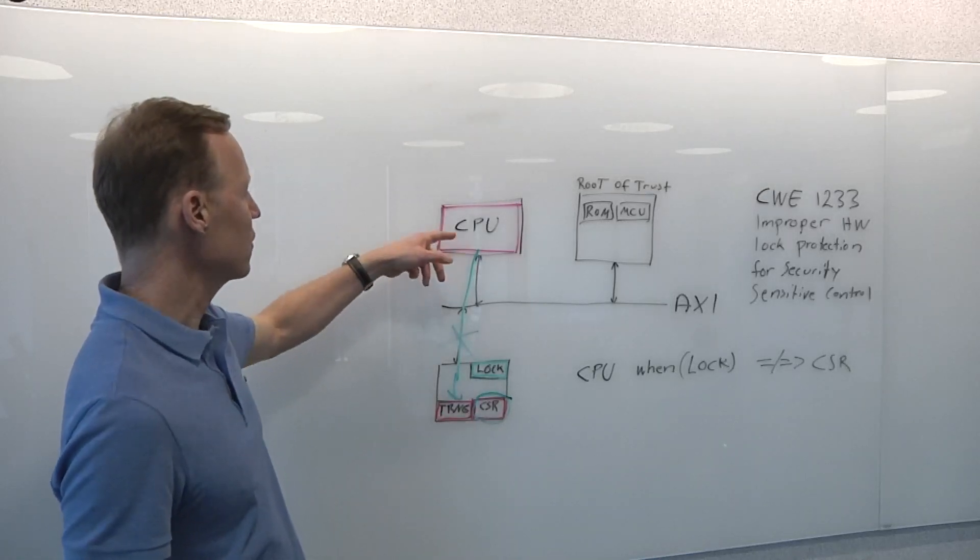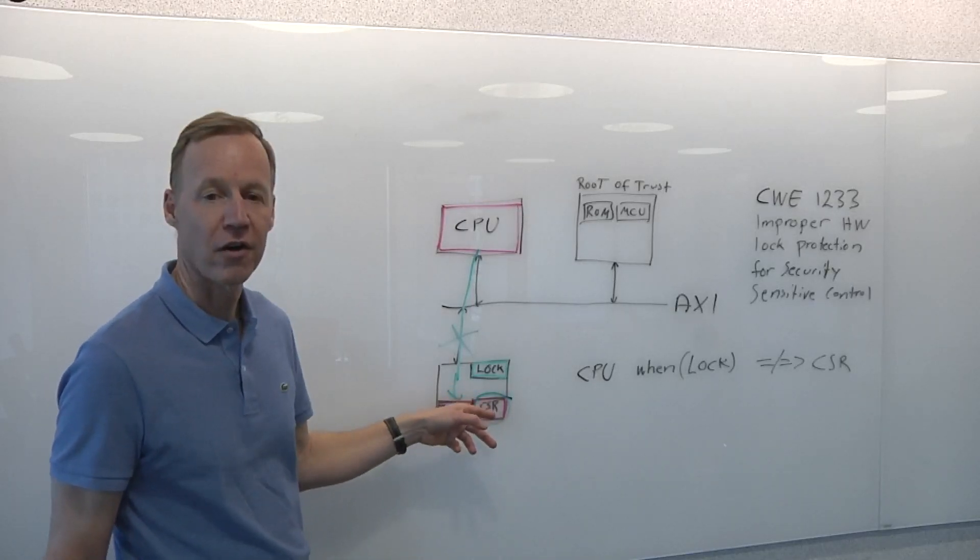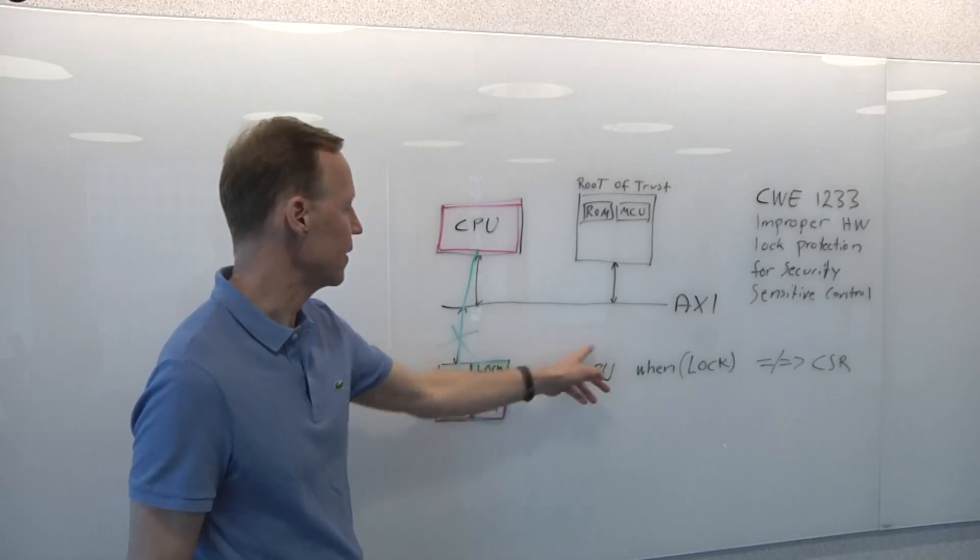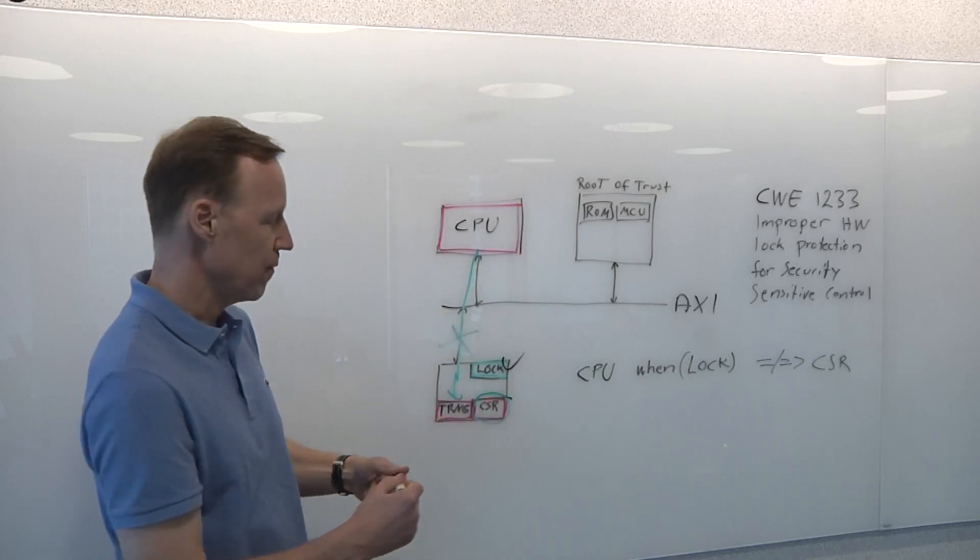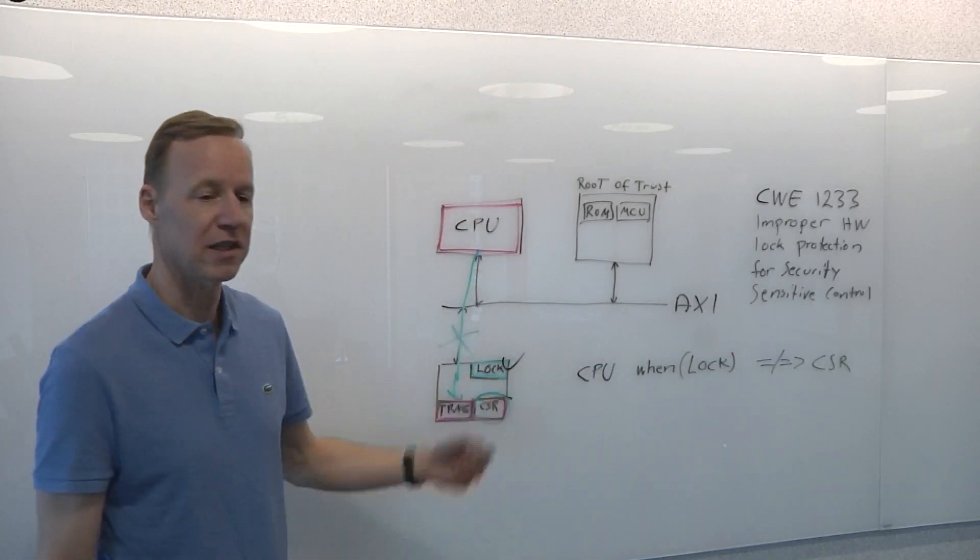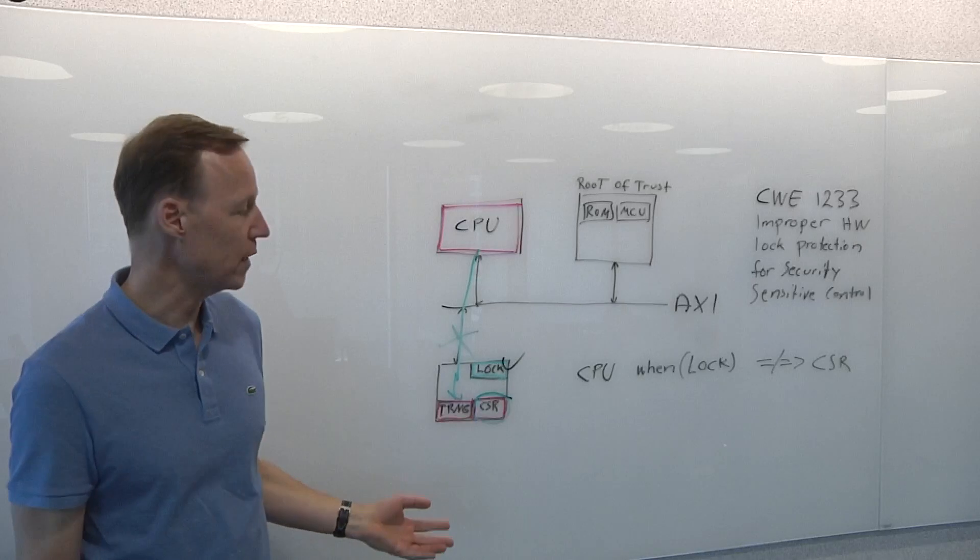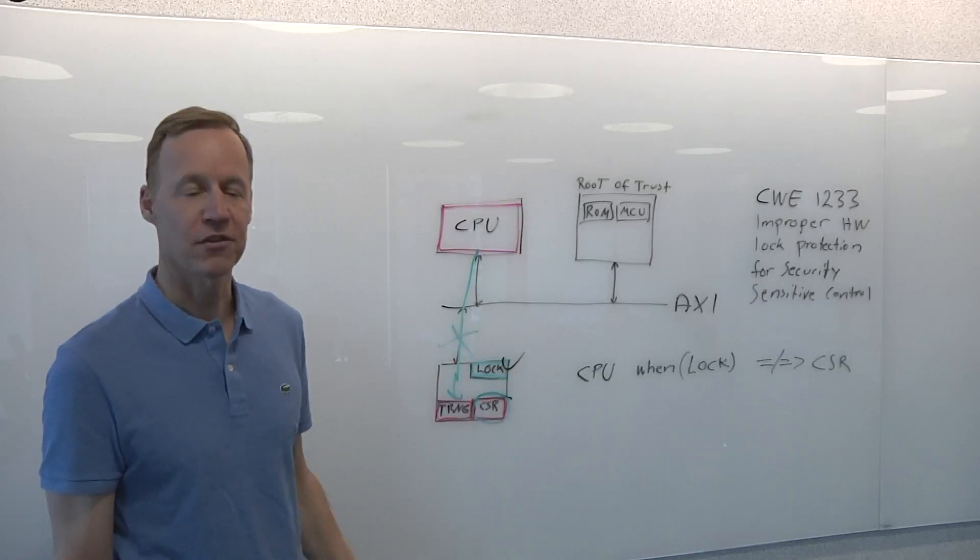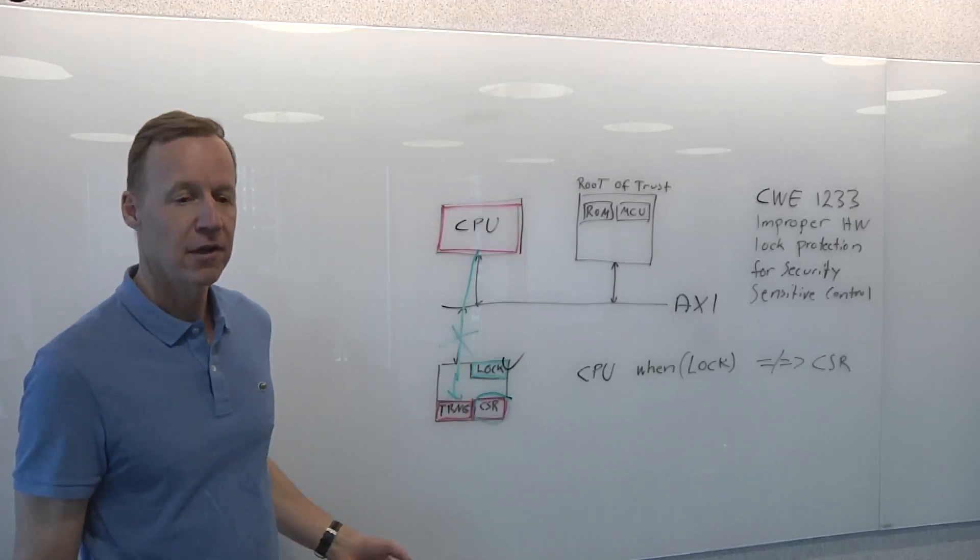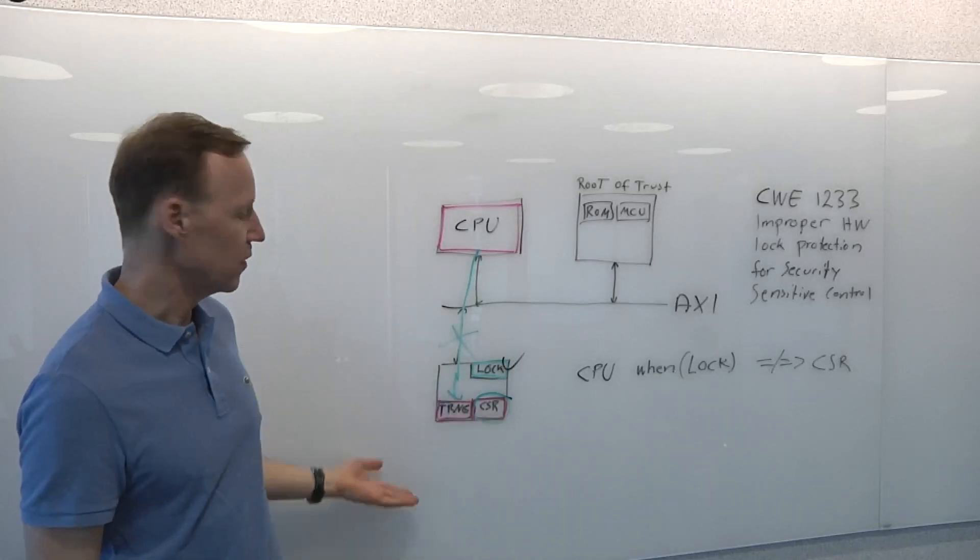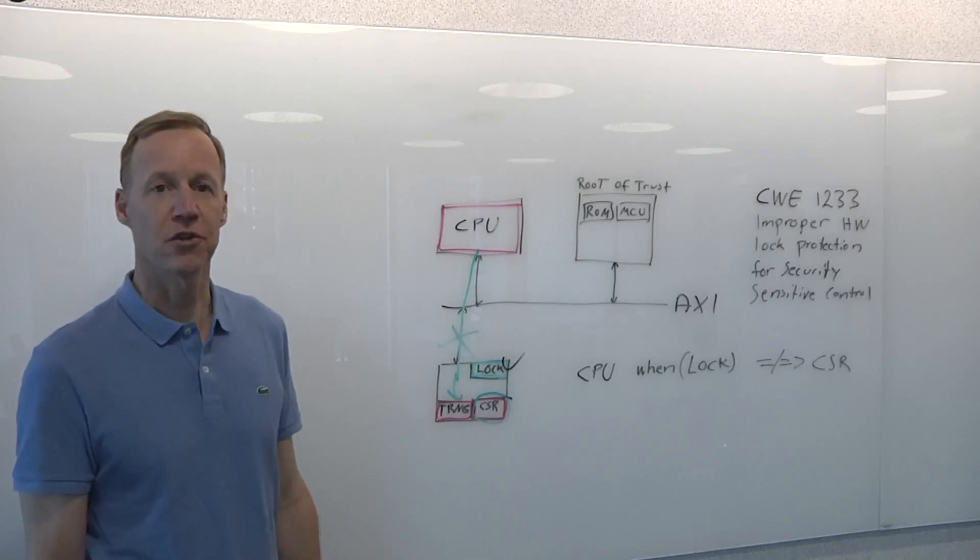So in this example, we're concerned that the CPU should not be able to modify the CSRs. So we can write a rule that says this data from the CPU, when this lock bit here is set, then information from the CPU should not flow to the CSR. And if that was attempted in your verification suite, the rule would flag that violation so you can debug it and correct it. And then when it's no longer violated, you now have a metric saying that this is what I verified and there are no violations. So it helps in understanding what has been verified from a security point of view.